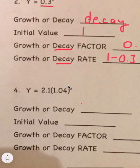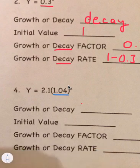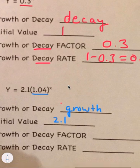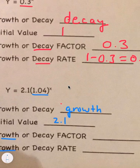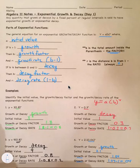For number 4, y equals 2.1 times 1.04 to the x. Is the b value greater than 1? Yes — so this is growth. The initial value is 2.1, the growth factor is 1.04, and the growth rate is 1.04 minus 1, which equals 0.04.